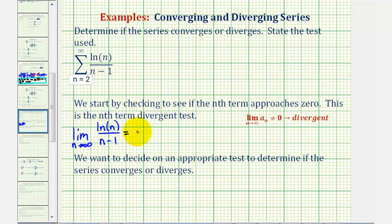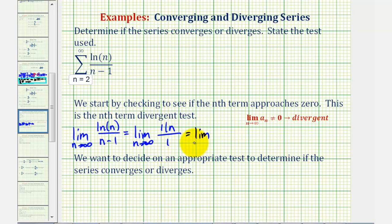So we'll have to apply L'Hôpital's rule to determine this limit, which means this limit is equal to the limit as n approaches infinity of the derivative of the numerator divided by the derivative of the denominator. The derivative of natural log n with respect to n is one divided by n, and the derivative of n minus one is just one, leaving us with the limit as n approaches infinity of one divided by n, which is equal to zero.